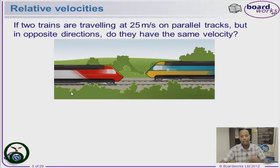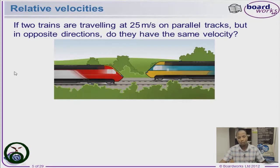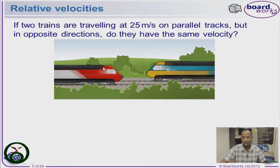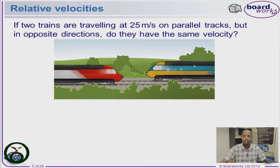Now let's take a look at relative velocity. For speed, we said we're looking at a quantity — 25 meters per second. That's the speed of this train that is moving right now. The other train also has an equal speed of 25 meters per second. But if we want to talk about velocity, we have to look at the direction with which these trains are moving.